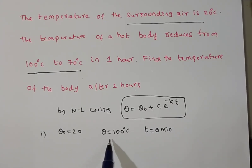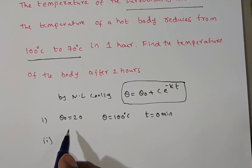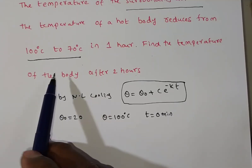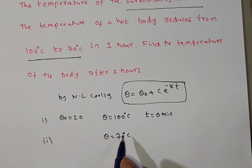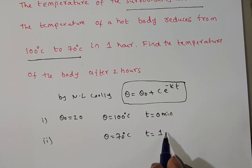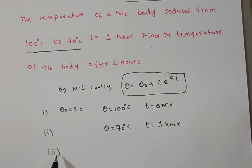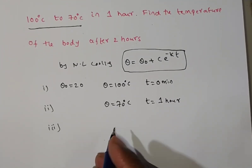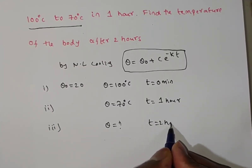Next, the second data: the hot body reduces to 70 degree centigrade in one hour, so at T equal to 1 hour, theta is 70 degree centigrade. And the third step: we need to find the temperature of the body after 2 hours.